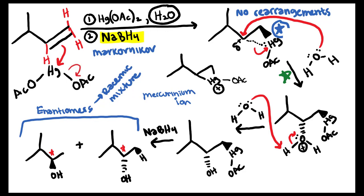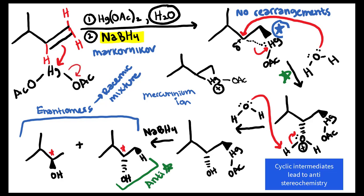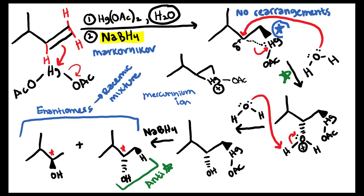The final consideration for this reaction is stereochemistry. If mercury attacks on a wedge, water must come from behind on a dash. Vice versa, if mercury attacks on a dash, water comes from the front face on a wedge. This means the OH and the H end up on opposite faces — that is known as anti-stereochemistry. It's important to remember that this reaction has anti-stereochemistry.